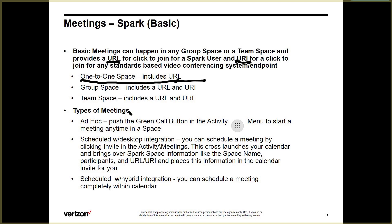Types of meetings: there's ad hoc — you push the green call button under the activity menu and start a meeting anytime in a space. You go to the space, click the activity menu, click the green call button, and it's going to ring everybody's Spark client. Everybody can click answer or join and they'll be brought into the meeting on their Spark clients.